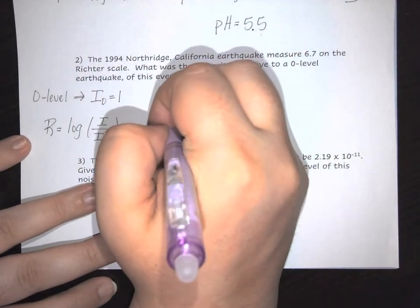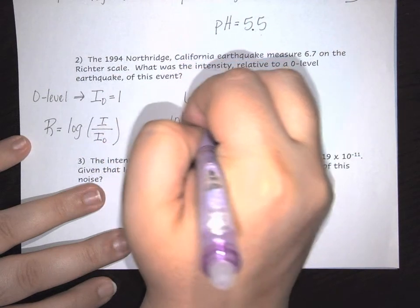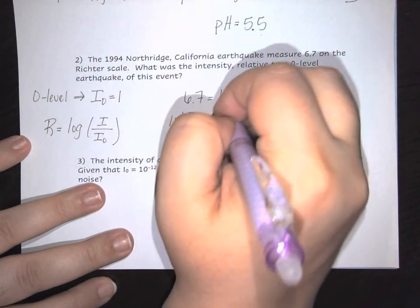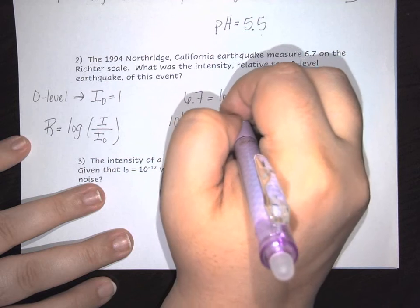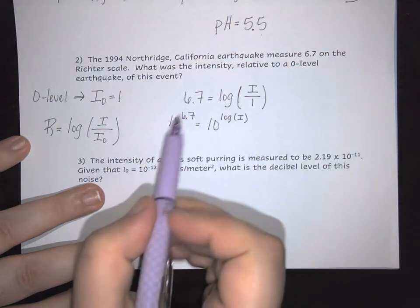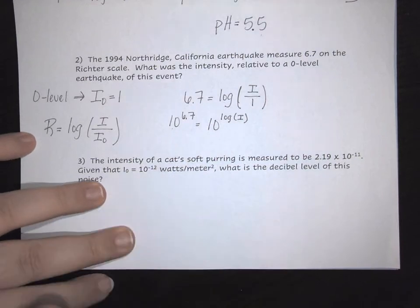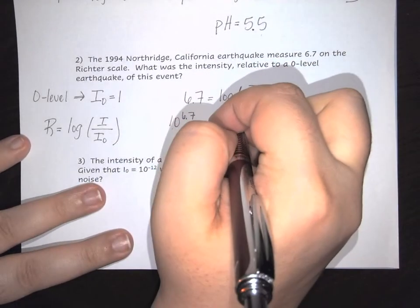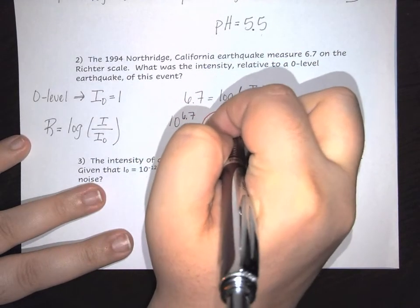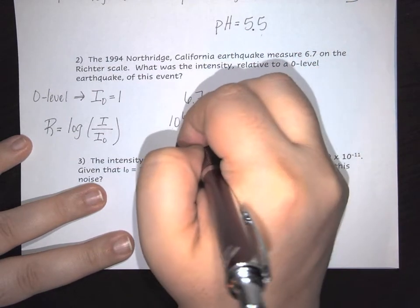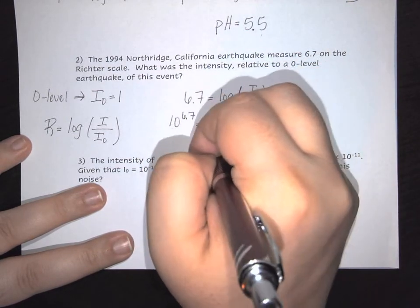The first thing you would do is raise 10 to the 6.7. That's going to allow us to use the rule that says we've got our bases raised, and so we can go ahead and solve. Essentially, this piece right here is going to undo each other.